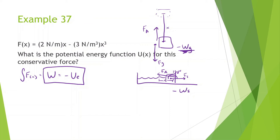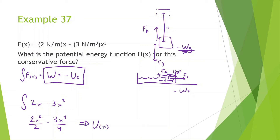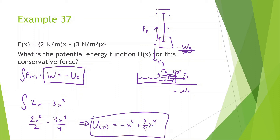Knowing that, for F(x) = 2x minus 3x cubed, the work function is 2x squared divided by 2 minus 3x to the fourth divided by 4. Since potential energy is the negative of work, U(x) = negative x squared plus three-fourths x to the fourth.